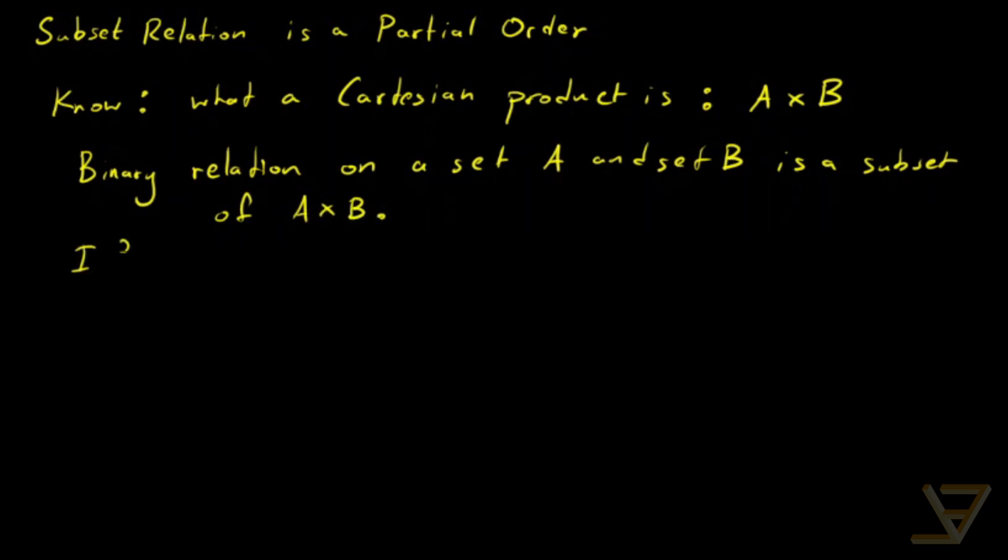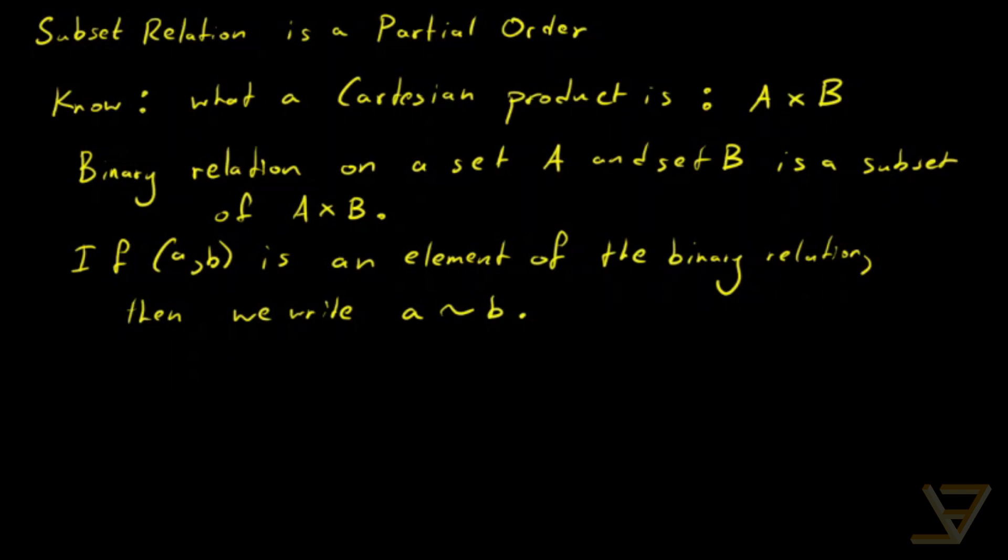And if AB is an element of the binary relation, then we write A tilde B. And notice that this is an ordered relation. We can't just say B tilde A at the same time unless there is a property of symmetry.